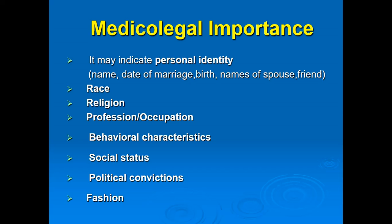The medical-legal importance of tattoo marks: they may indicate personal identity — some people write or imprint their name, date of birth, date of marriage, or name of a spouse or friend — giving the identity of that person. Regarding race determination: Japanese people are fond of getting tattoos on the chest and limbs, so a person with tattoos on those sites may be Japanese.